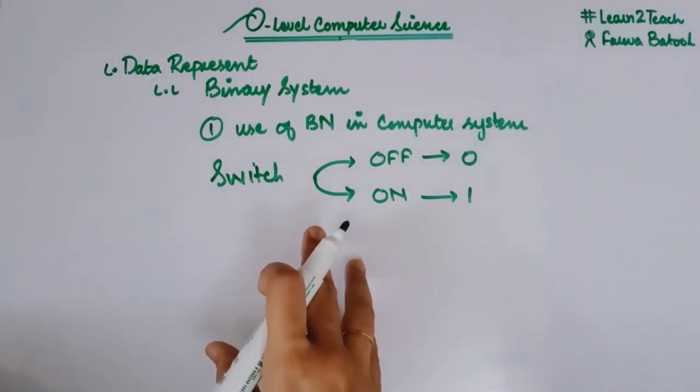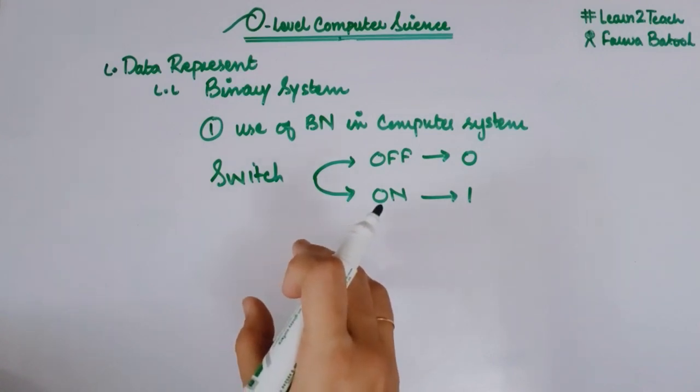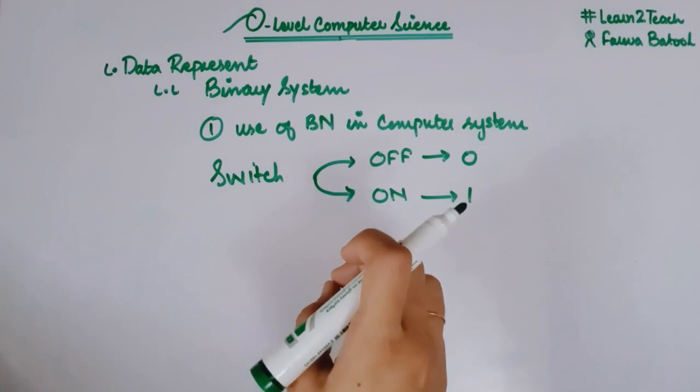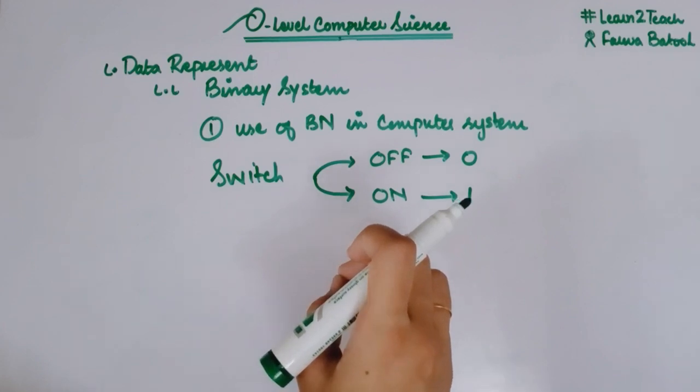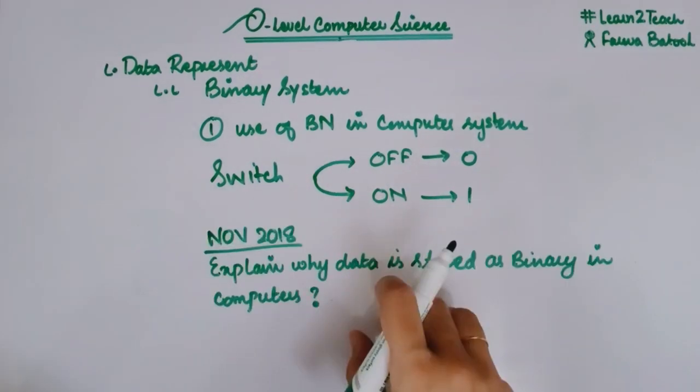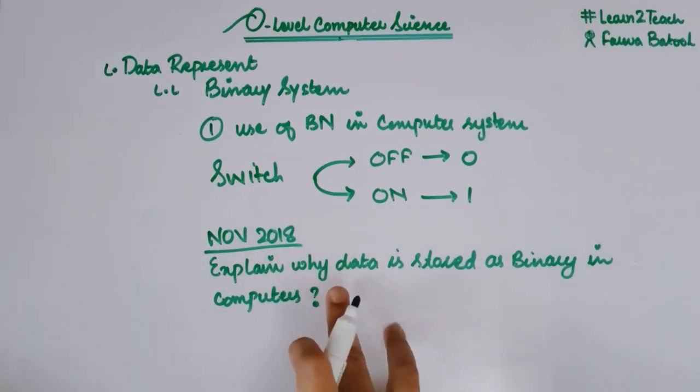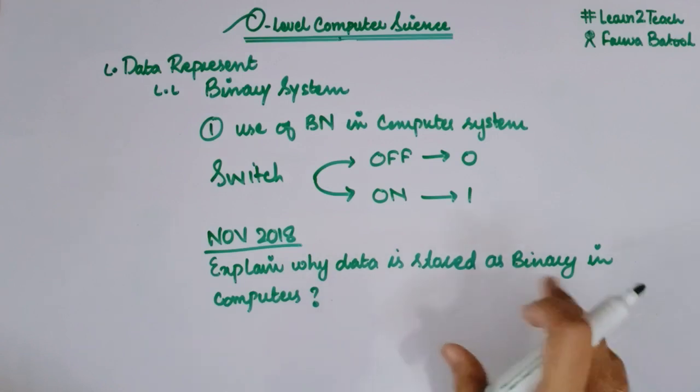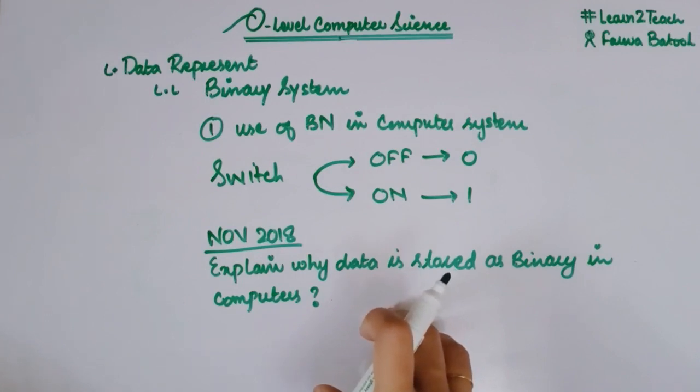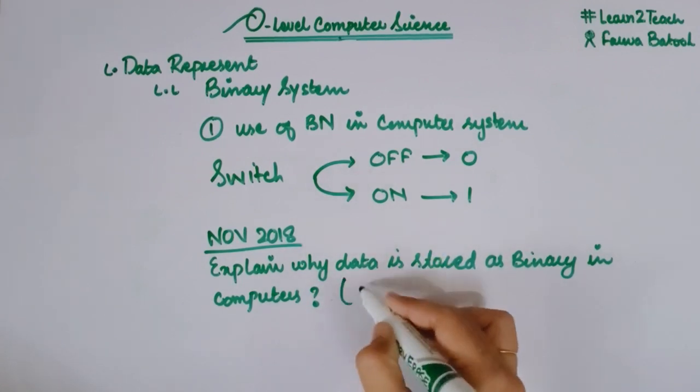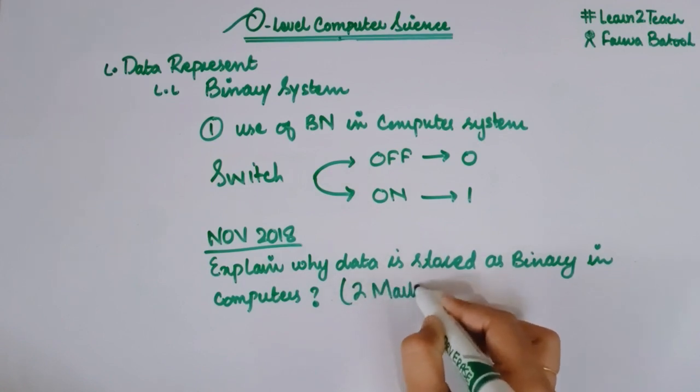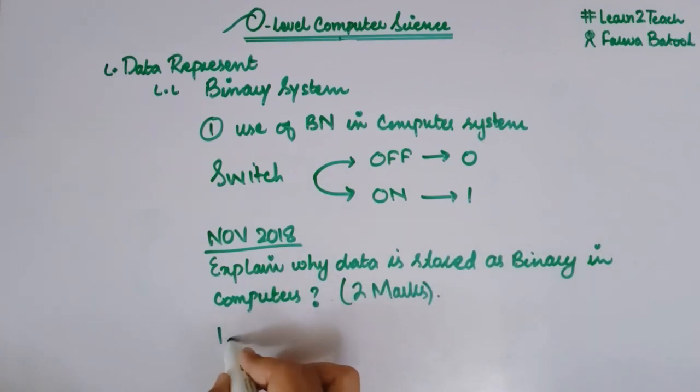I hope the reason is clear to you. Now let me tell you how this comes into the exam. In the past paper, it basically came as a simple question. Here is the question that arose in the paper of November 2018: 'Explain why data is stored as binary in computers.' I have already taught you the answer—it's a two-marks question, so you need to write two points. The very first point is computer has switches.